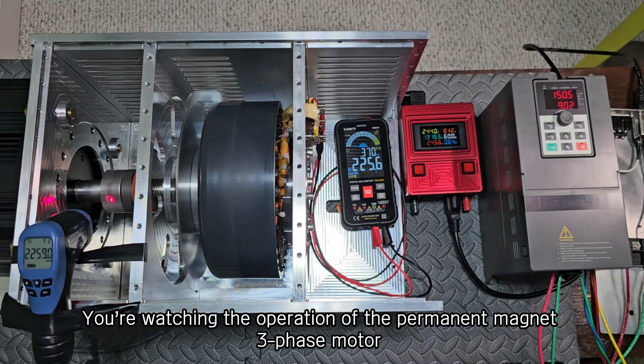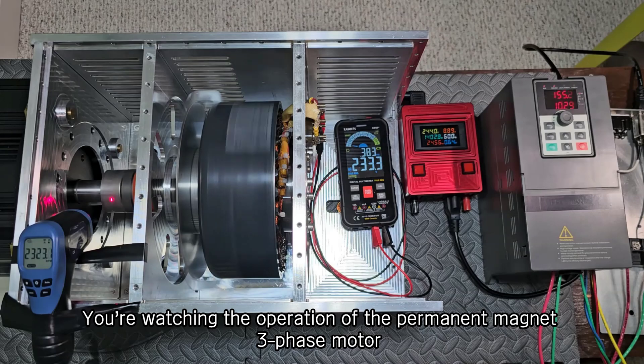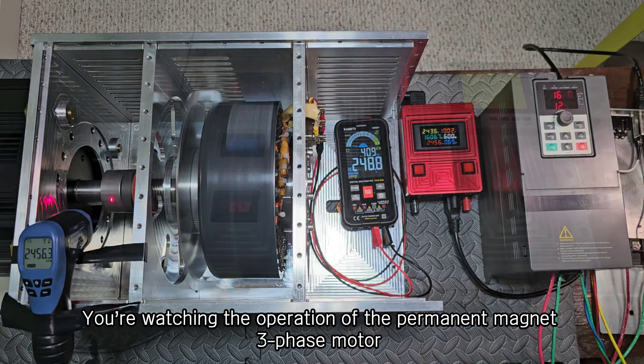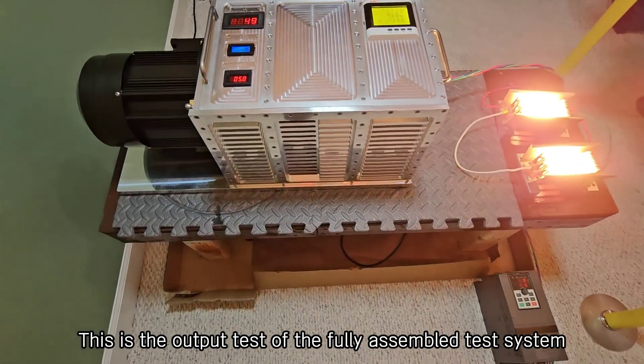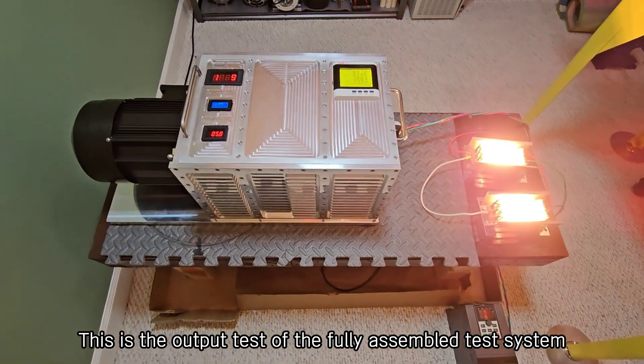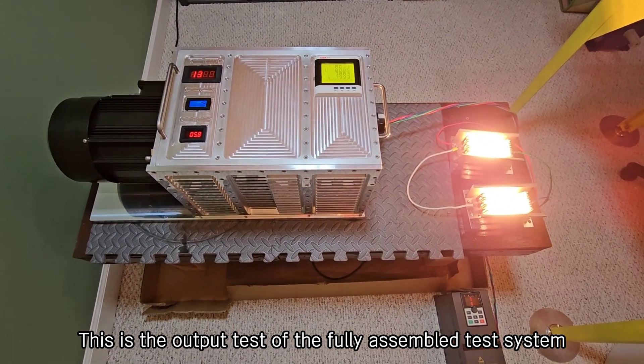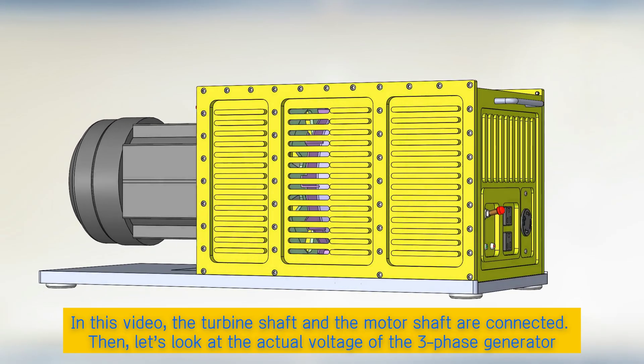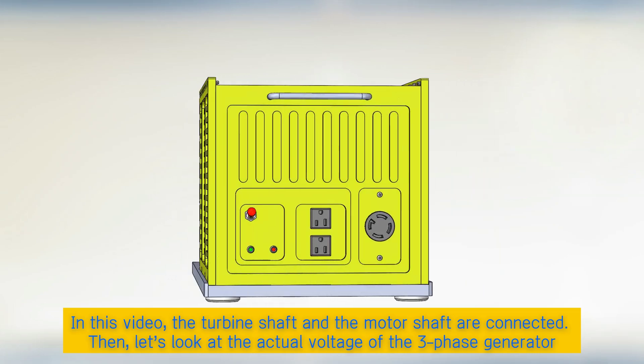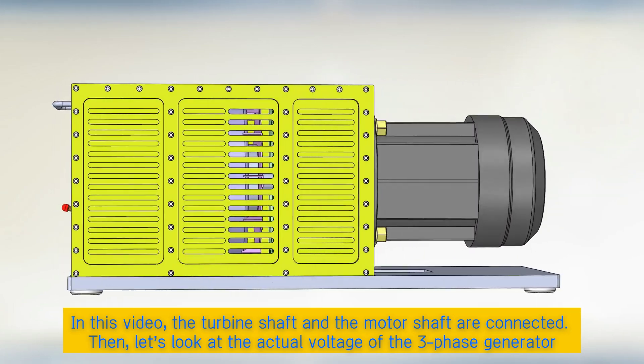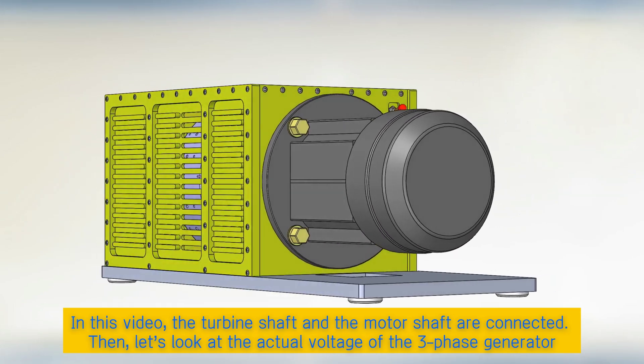You're watching the operation of the permanent magnet 3-phase motor. This is the output test of the fully assembled test system. In this video, the turbine shaft and the motor shaft are connected. Then, let's look at the actual voltage of the 3-phase generator.